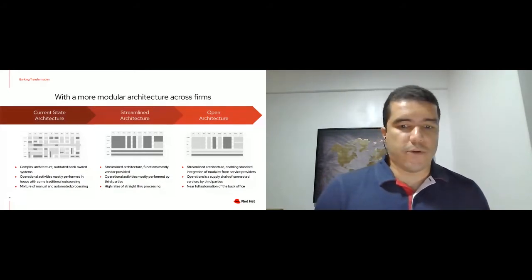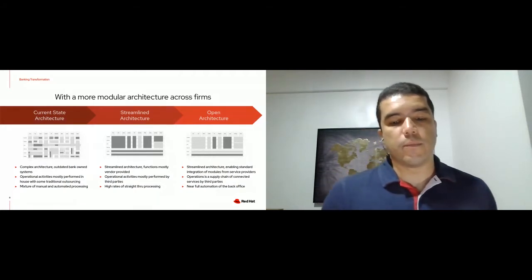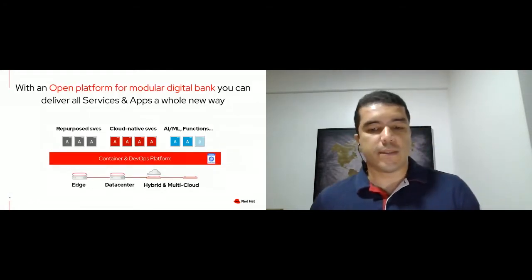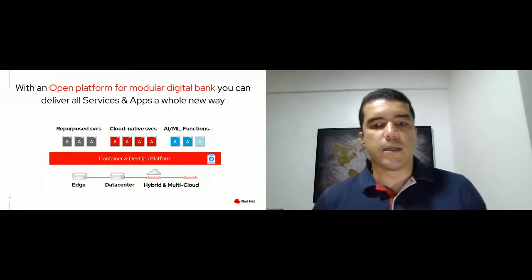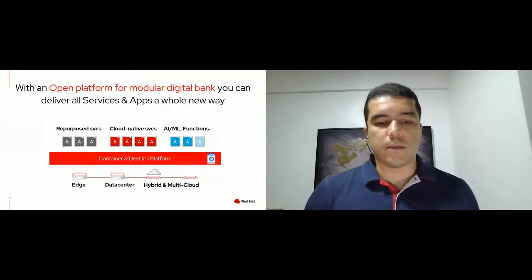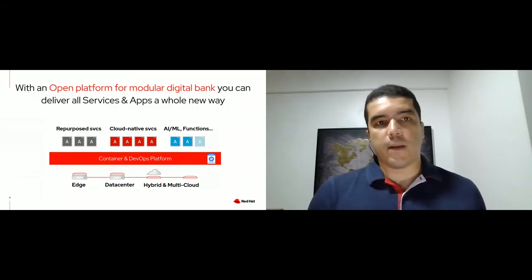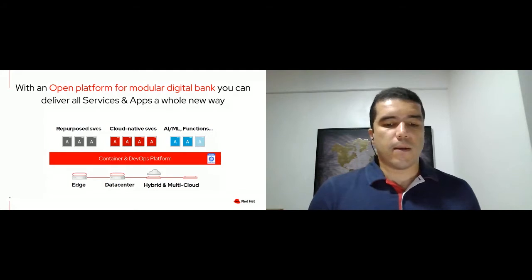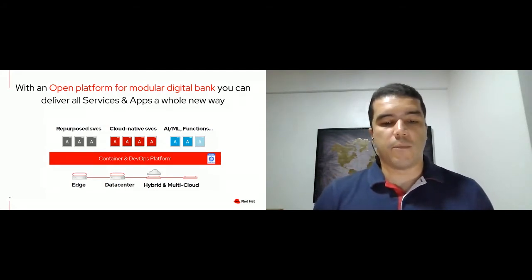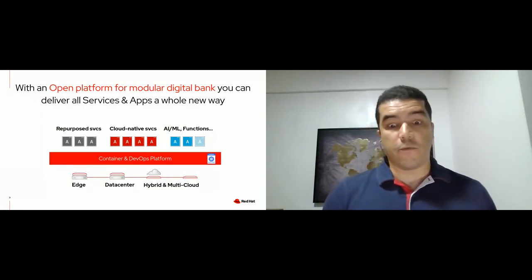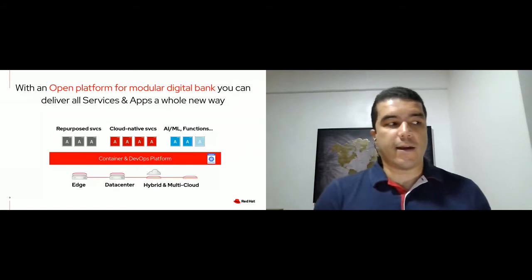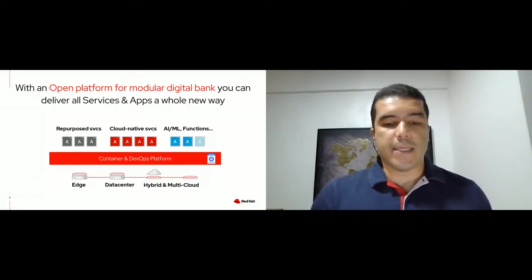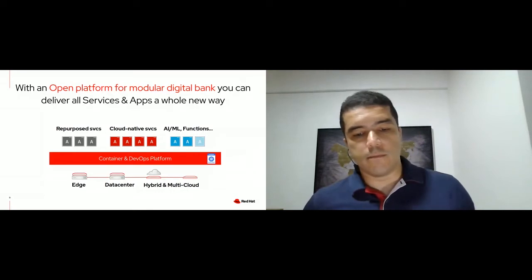Banks that struggle to develop modular services will need differentiation models and competitive advantage. We believe containers, a trusted enterprise Kubernetes, and DevOps are the key ingredients that a modern platform should be based on, allowing you to transform into a modular digital bank, build cloud-native applications, employ analytics, manage machine learning, and serverless applications. An open platform needs to provide a consistent way for developers and operations teams to collaborate across deployment footprints — from edge and air-gap environments to your own data center and all the way to the hybrid cloud.